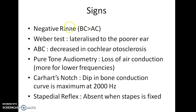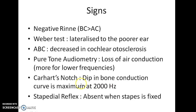What are the signs? Rinne's test will be negative — that is, bone conduction will be better than air conduction. Weber's test will be lateralized to the poorer ear. Absolute bone conduction will be decreased in cases of Cochlear Otosclerosis. Pure tone audiometry reveals a loss of air conduction more for lower frequencies. A peculiar sign called Carhart's notch is seen — that is, there will be a dip in the bone conduction curve maximum at 2000 Hz.